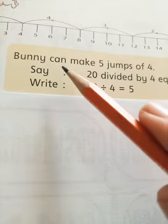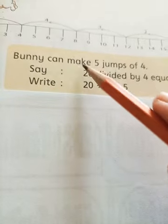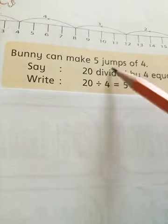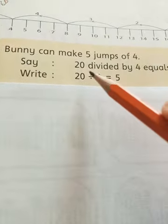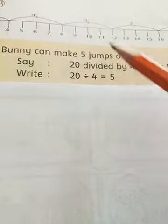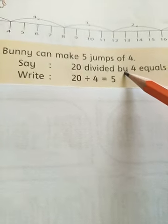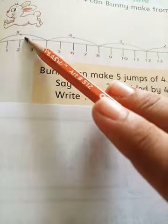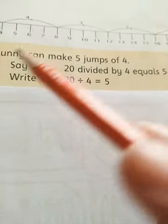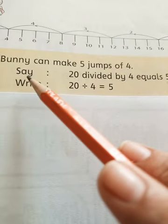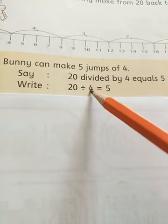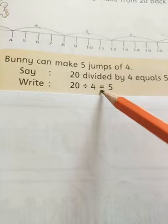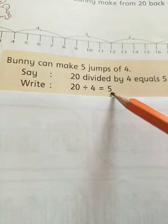Bunny can make 5 jumps of 4. So we will say it: 20 divided by 4 is equal to how many jumps he made? 5. So we can write it as: 20 divided by 4 is equal to 5.